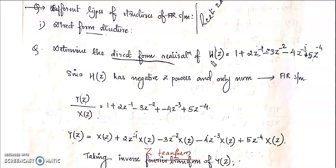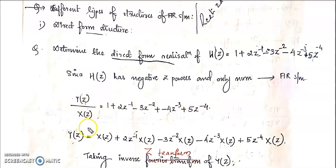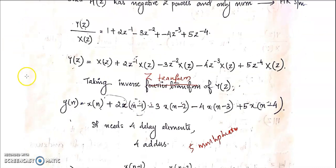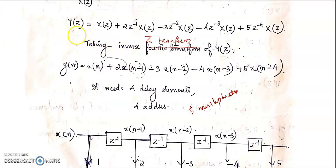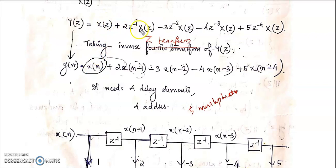We know that H(Z) = Y(Z)/X(Z). So Y(Z)/X(Z) = 1 + 2Z⁻¹ − 3Z⁻² − 4Z⁻³ + 5Z⁻⁴. From that we can compute Y(Z), then we take the inverse Z-transform to get Y(N). Here, Z⁻¹ represents a delay.